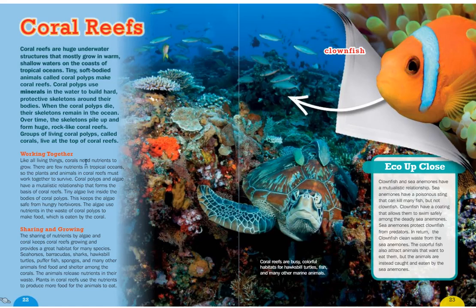Corals need nutrients to grow, but there are few nutrients in tropical oceans, so plants and animals in coral reefs must work together to survive. Coral polyps and algae have a mutualistic relationship — meaning two organisms that help each other survive — that forms the basis of coral reefs. Tiny algae live inside the bodies of coral polyps; the coral keeps the algae safe from herbivores, and the algae use nutrients in the coral's waste to make food for the coral. This sharing of nutrients helps coral reefs grow and provides habitat for seahorses, barracudas, sharks, hawksbill turtles, puffer fish, sponges, and many other animals.